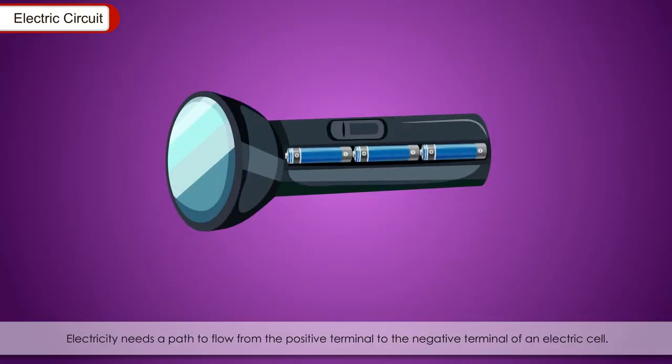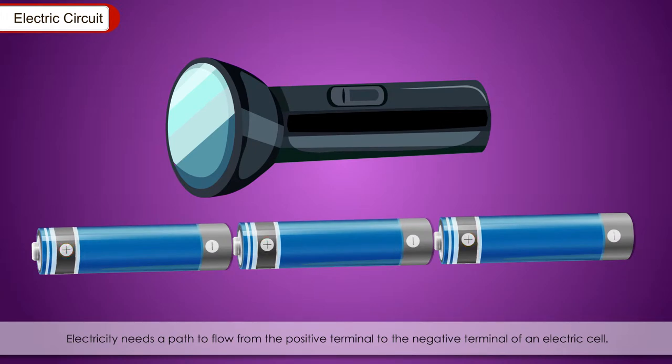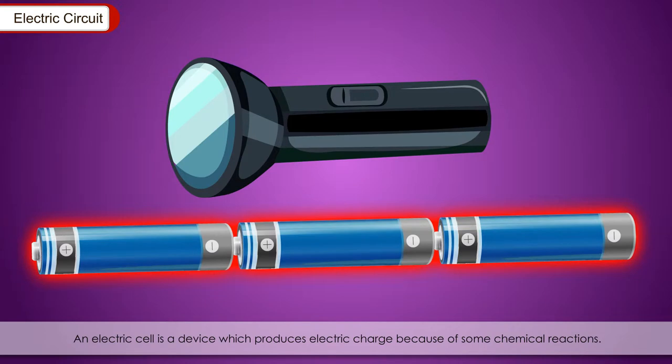Electric circuit: Electricity needs a path to flow from the positive terminal to the negative terminal of an electric cell. An electric cell is a device which produces electric charge because of some chemical reactions. The cell which is used in a torch is called dry cell. The wet cells are used in car batteries. A normal dry cell gives an output of 1.5 volts.